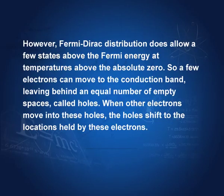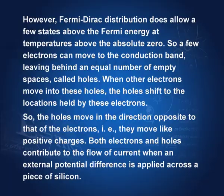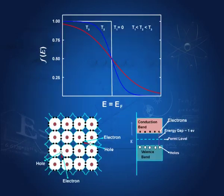Pure silicon is almost an insulator. However, Fermi-Dirac distribution does allow a few states above the Fermi energy at temperatures above absolute zero. Those electrons can move — a few electrons can move to the conduction band, leaving behind an equal number of empty spaces called holes. If any one of these electrons moves, it leaves a gap; this gap is called a hole. When other electrons move into these holes, the holes shift to the location held by the electrons.